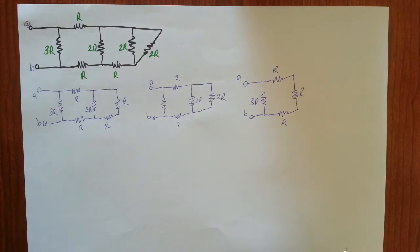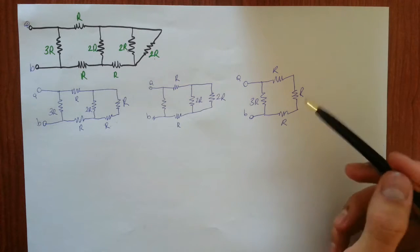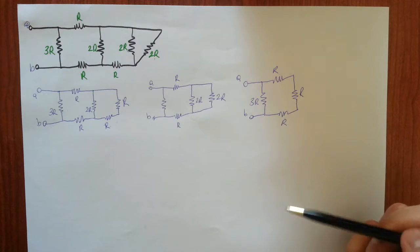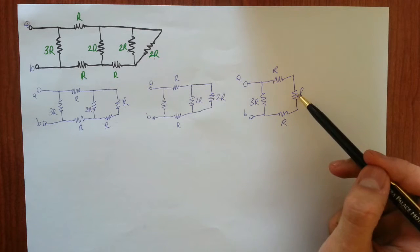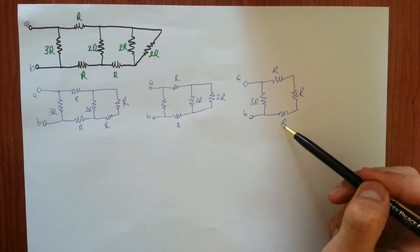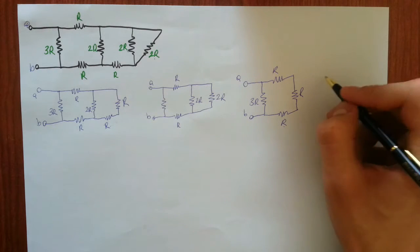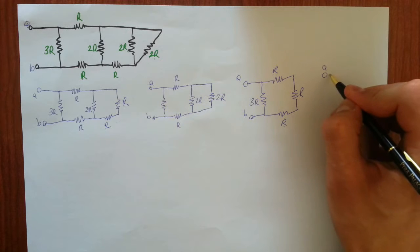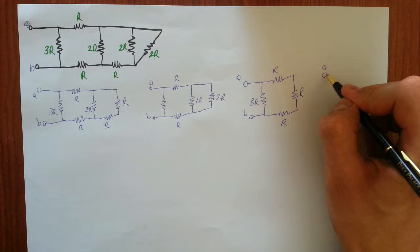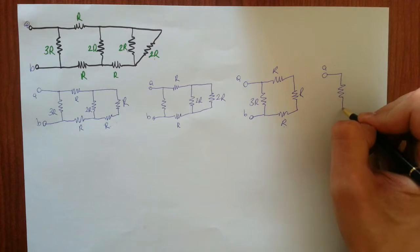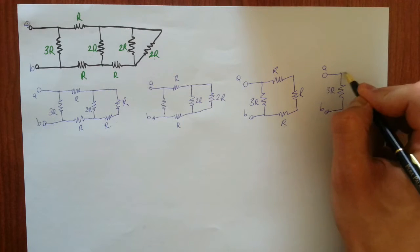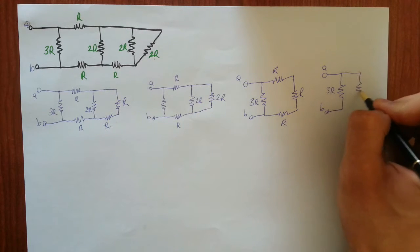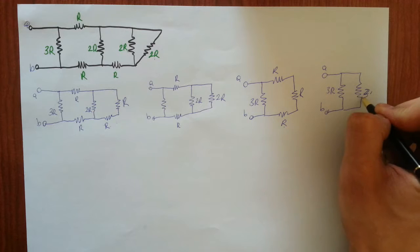Alright, so three resistors in series — they make one, two, three R as a single resistor. Let's draw it: terminal A, 3R, terminal B, and equivalent 3R resistor. 3R.